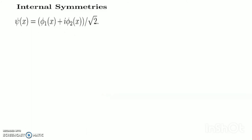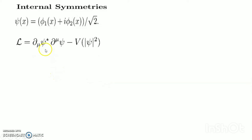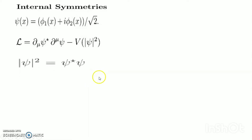We can build a real Lagrangian: L equals del_mu psi* del^mu psi minus V(|psi|^2), where the potential is a general polynomial in |psi|^2, which equals psi* times psi.